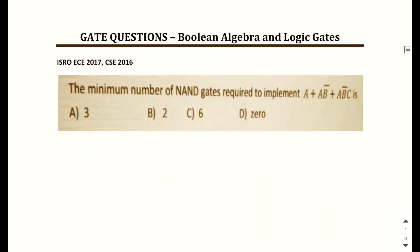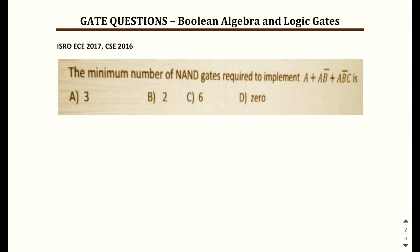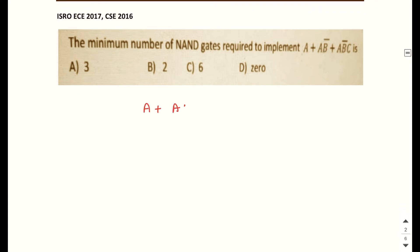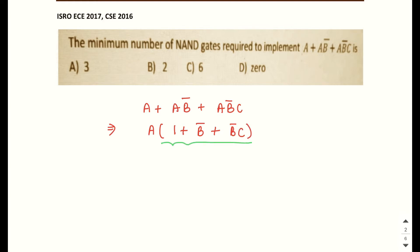The next question: find the minimum number of NAND gates required to implement a + ab̄ + ab̄c. The first step is to check whether the expression is minimized. In this case it is not minimized — we can take a common, giving a(1 + b̄ + b̄c). The complete bracket is equivalent to 1, so the expression reduces to a·1 = a. For implementing the single variable a you don't require any NAND gates, so the answer is 0.